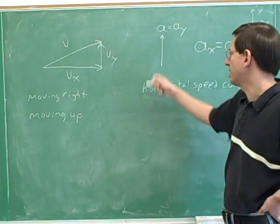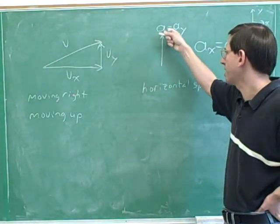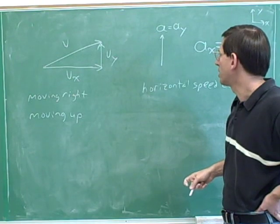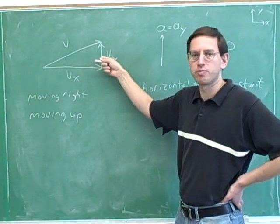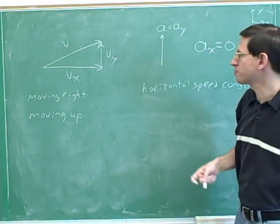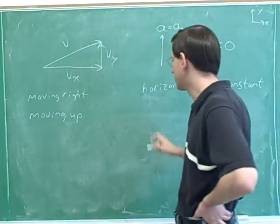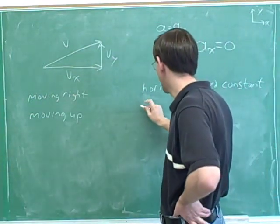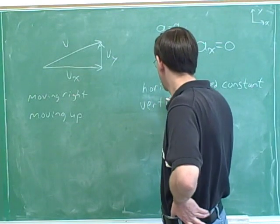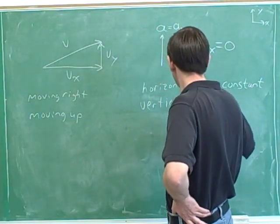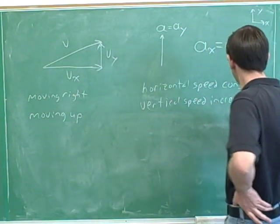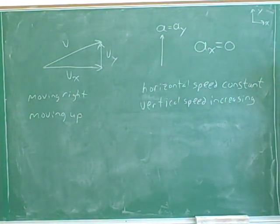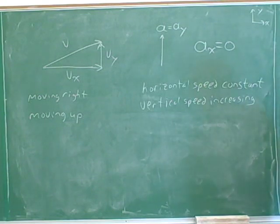It should be more straightforward to interpret the y component. Our vertical acceleration is pointing up and our vertical velocity is also pointing up, so a_y is parallel to v_y. So vertically, we're speeding up — our vertical speed is increasing — because a_y is parallel to v_y.